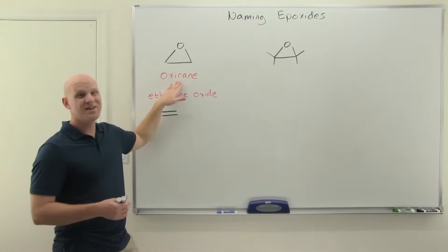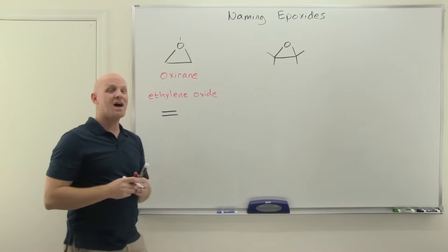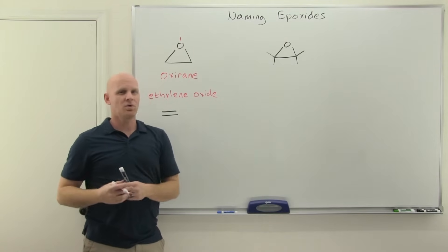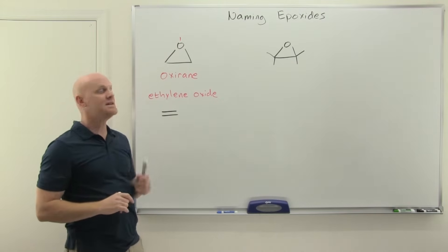So the IUPAC systematic way calls it an oxerane. And when you name it as an oxerane, this is going to be unique. The oxygen gets to be atom number one. Normally we only number carbons in most organic molecules. If you name this as an oxerane, that is going to be the exception.